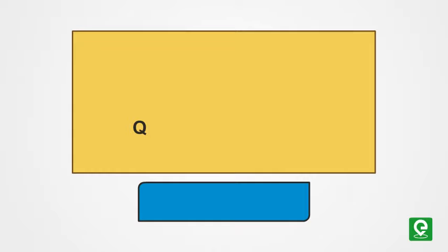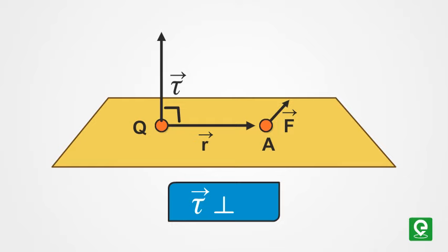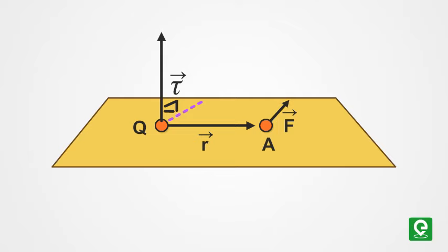Mathematically, torque about a point is defined as the vector product of position vector and the force. Torque is a vector which is perpendicular to both the position vector and the force vector. As a result, the torque is a vector perpendicular to the plane defined by position vector and force.